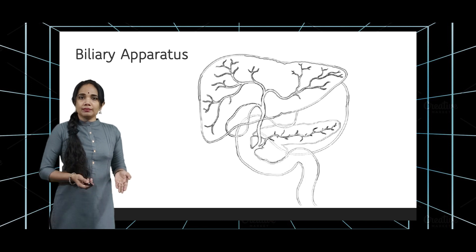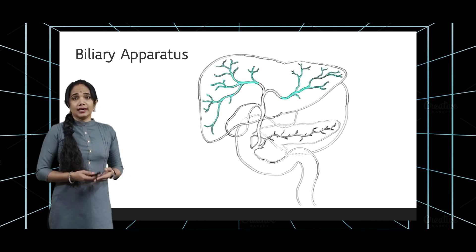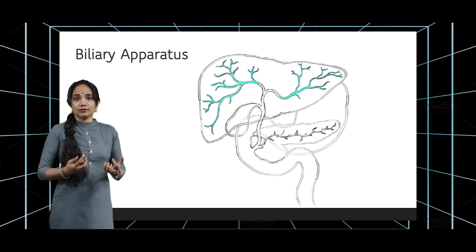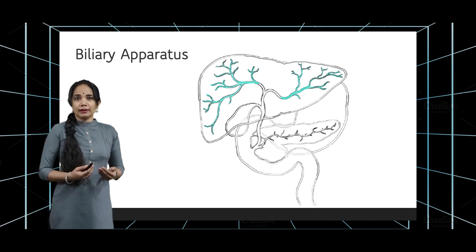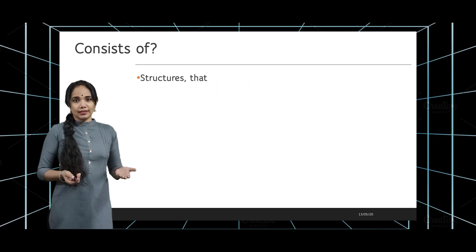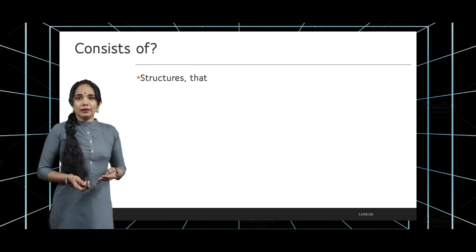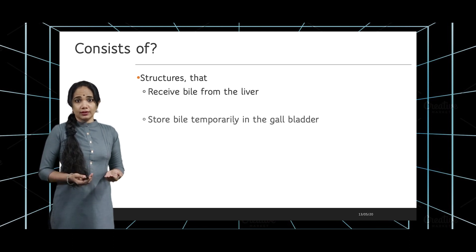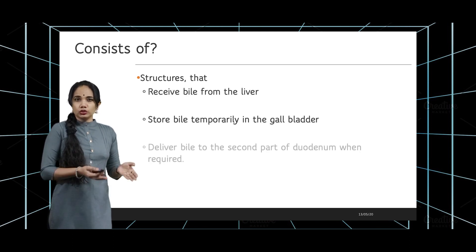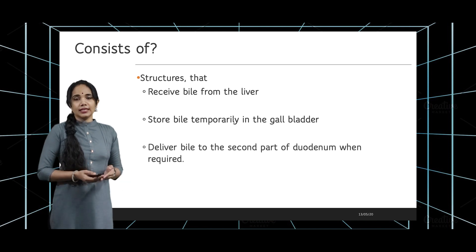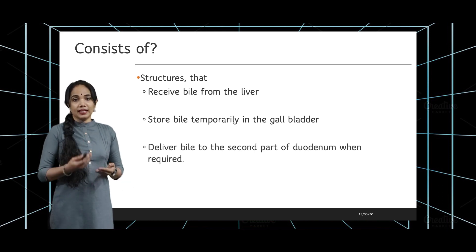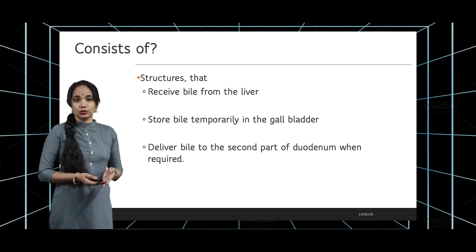The intrahepatic biliary apparatus collects the bile produced in the bile canaliculi, and once it is collected, this bile is transported outside via the extrahepatic biliary apparatus. The extrahepatic biliary apparatus consists of structures that receive bile from the liver, store bile temporarily in the gallbladder, and deliver bile to the second part of the duodenum as and when required.